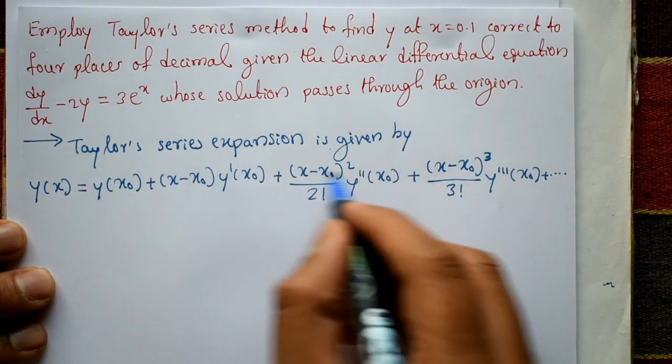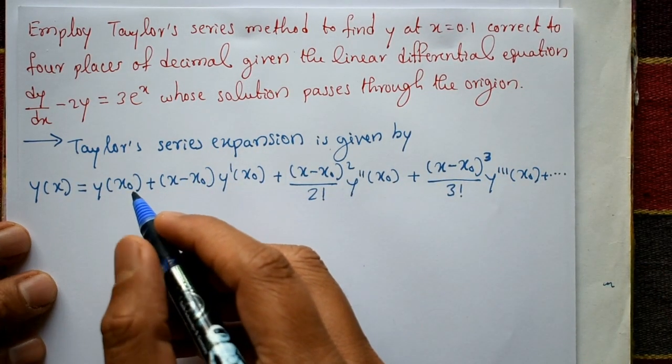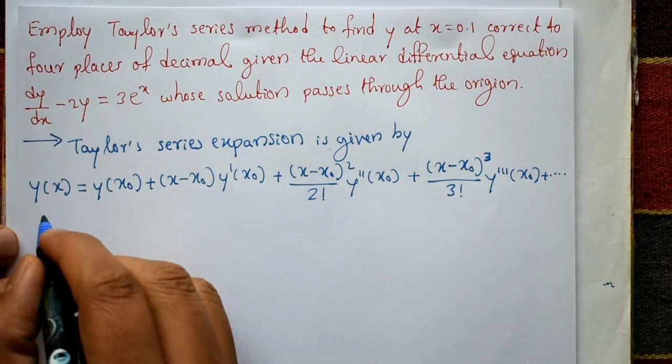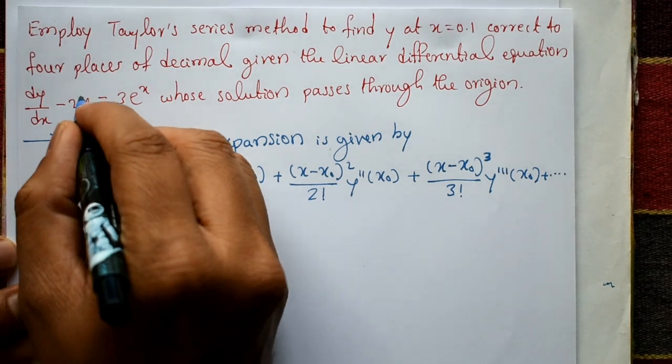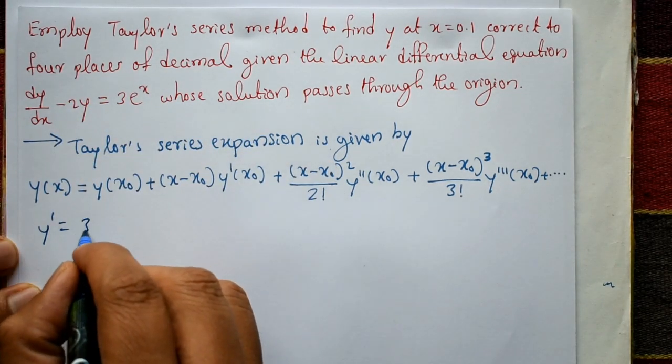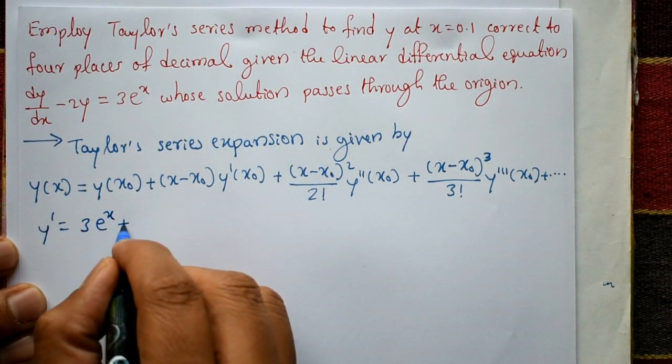This is a Taylor series expansion formula. The given equation can be rewritten as y' = 3e^x + 2y by shifting the right-hand side.